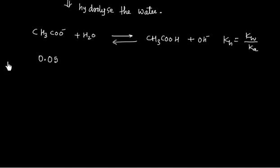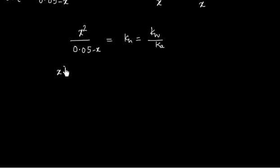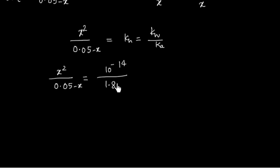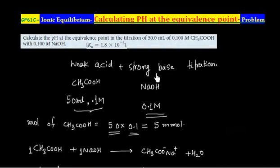At T = 0, acetate ion is 0.05 M and products are 0. At equilibrium, X moles of acetate ion dissociate, giving X moles of acetic acid and X moles of OH⁻. We can write: X² / (0.05 − X) = Kh = Kw / Ka. Kw is 10⁻¹⁴ and Ka is given as 1.8 × 10⁻⁵.